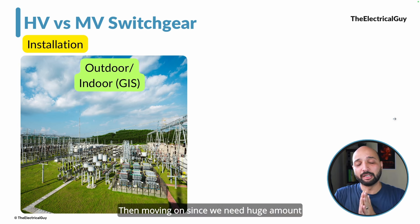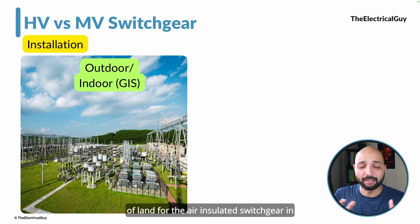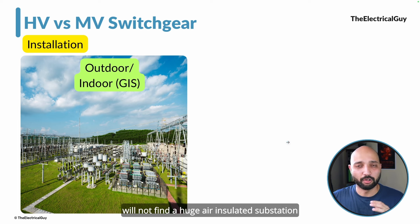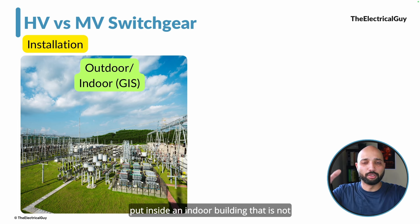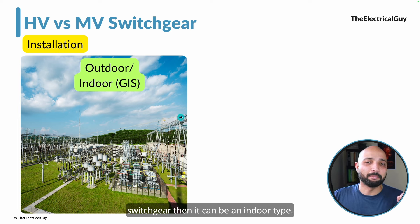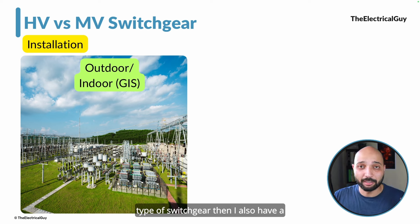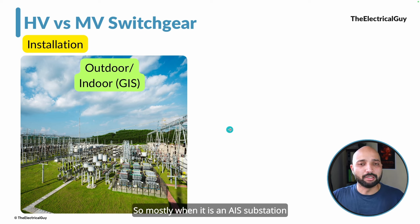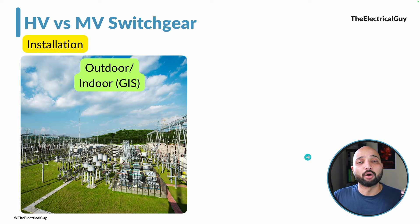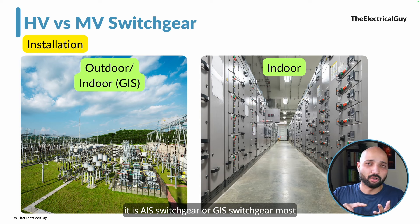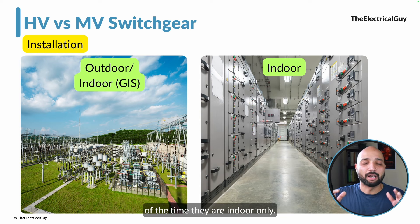Since we need a huge amount of land for air insulated high voltage switchgear, these substations are mostly outdoor. You will not find a huge air insulated substation inside an indoor building. If it is a GIS type, it can be indoor. But mostly when it is an AIS substation it is installed outdoor. In medium voltage, whether it is AIS or GIS switchgear, most of the time they are indoor.